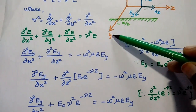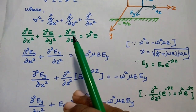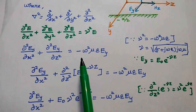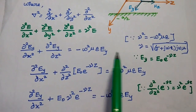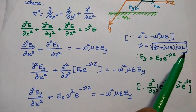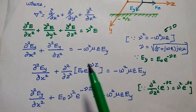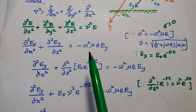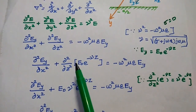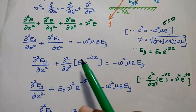Since there is no EY component in the Y direction, that term becomes 0. For ∂²EY/∂Z², since gamma = √[(σ + jωε)(jωμ)] and in this parallel plane σ = 0, we can write γ² = −ω²με. So ∂²EY/∂Z² = −ω²με · EY. In the next step, we write the EY term in terms of a magnitude with propagation direction: EY = E₀ · e^(−γZ), where E₀ is the magnitude and e^(−γZ) is the propagation factor including the phase.